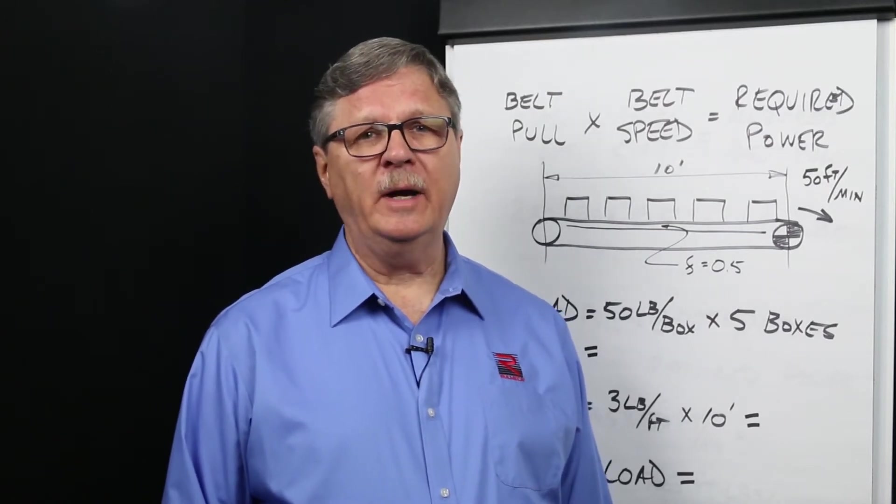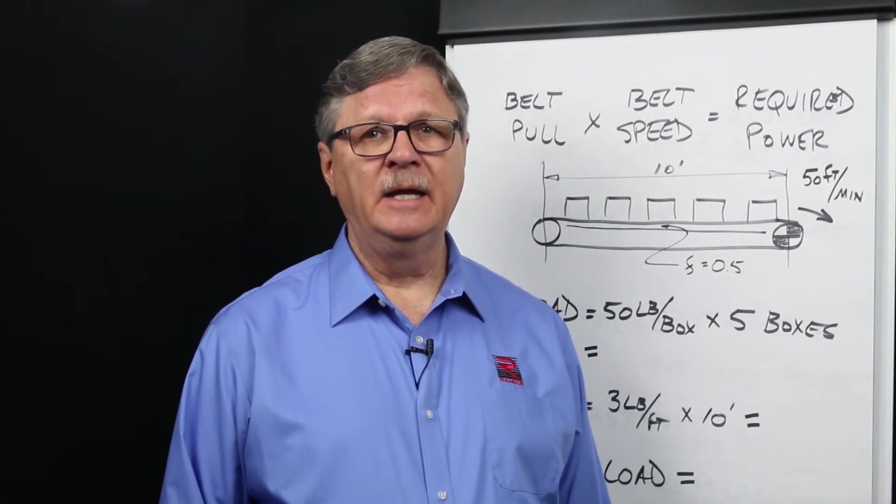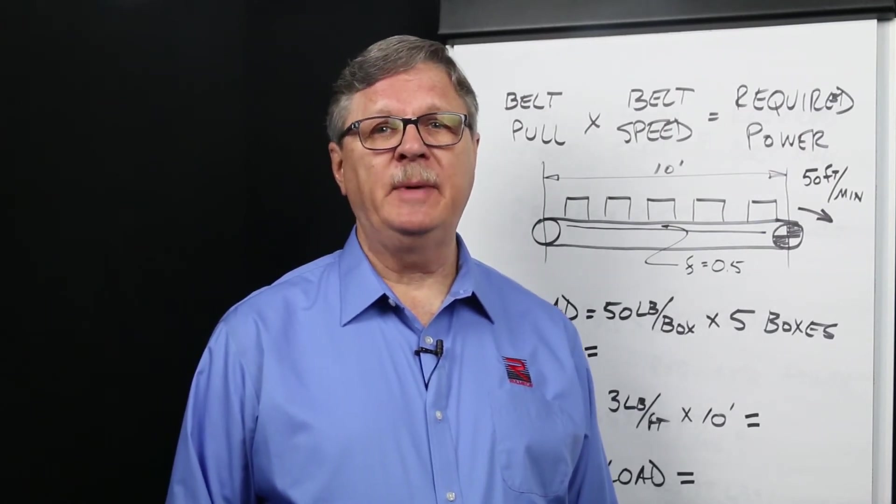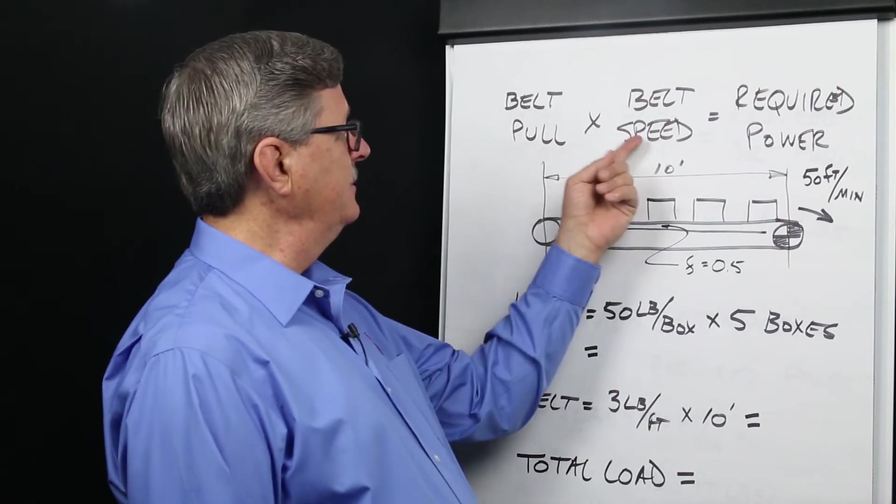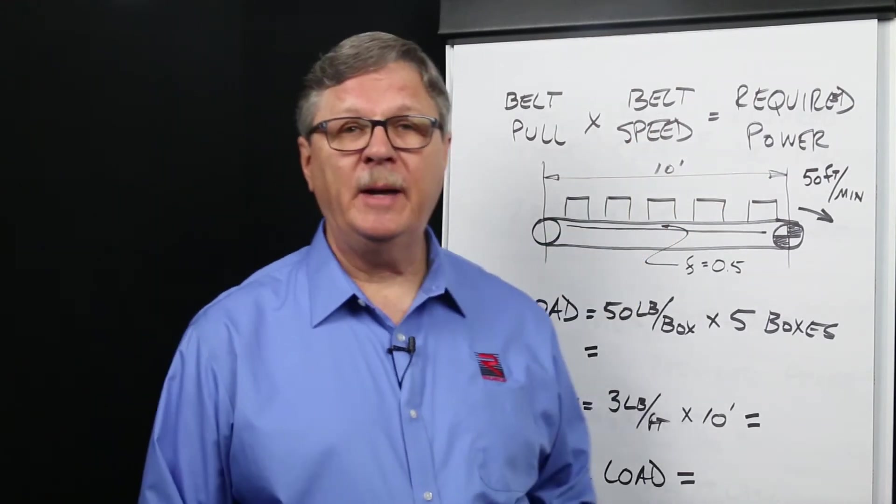We know that the power required to move a load on a belt conveyor equals belt pull times belt speed. Belt pull times belt speed equals required power.